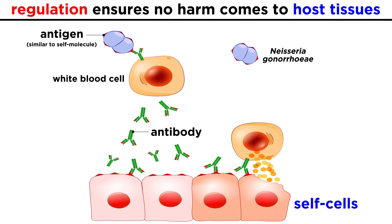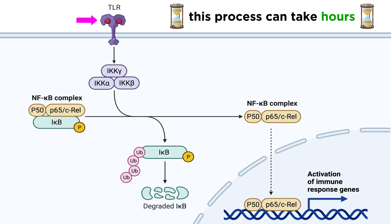As we've discussed before, the immune system needs to be tightly regulated so that the mechanisms which fight pathogens don't start harming host tissues, but it can take hours to sense a threat, and then transcribe and translate effector proteins.